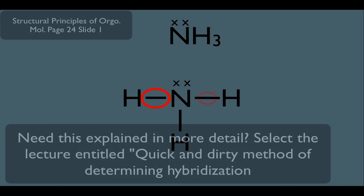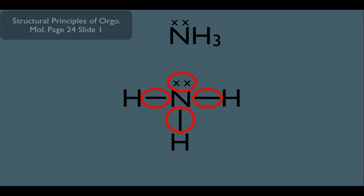We determine the steric number, and in this case, the nitrogen in the center has a total steric number of 4, which means this central nitrogen is therefore sp3 hybridized.